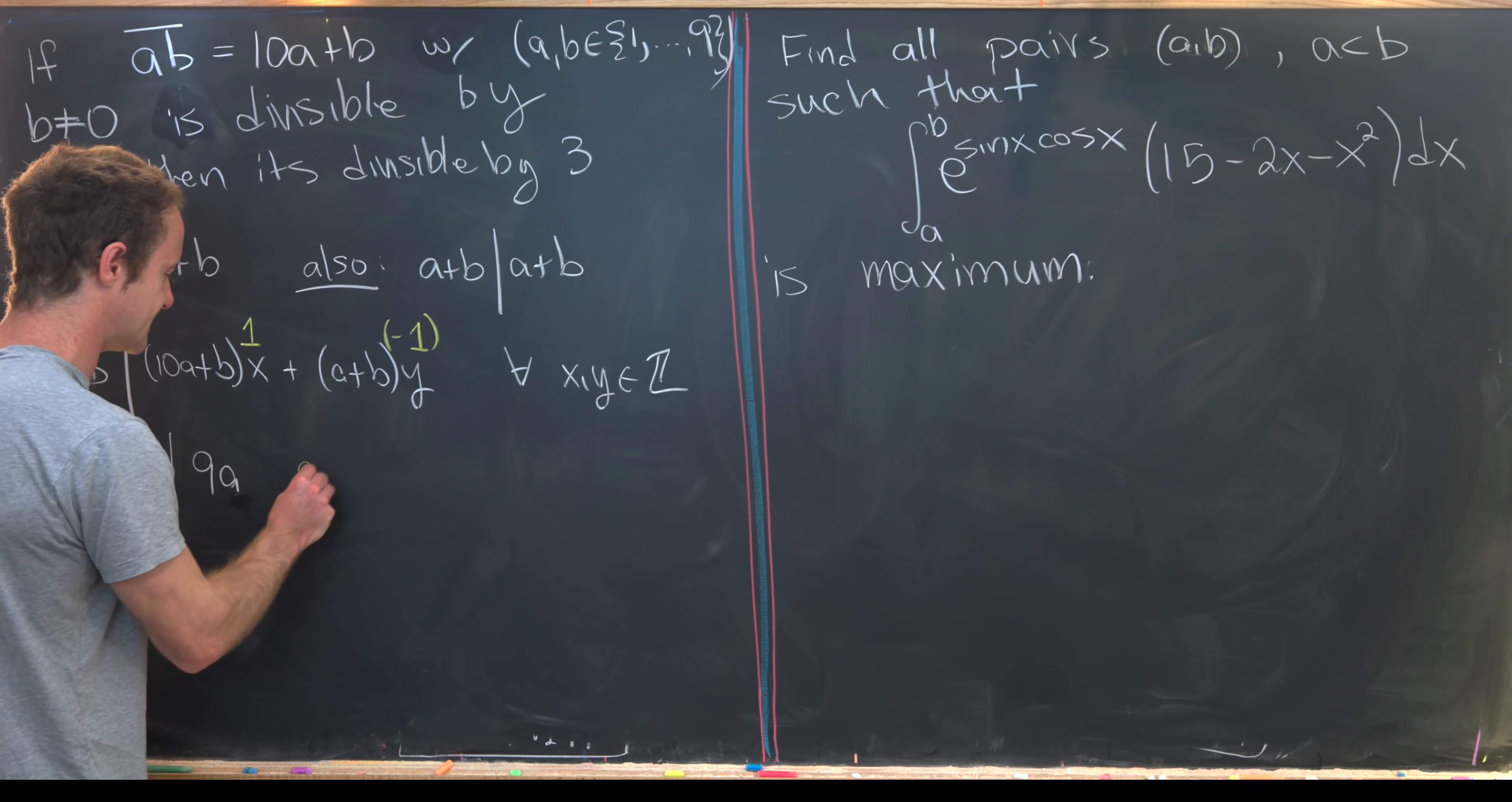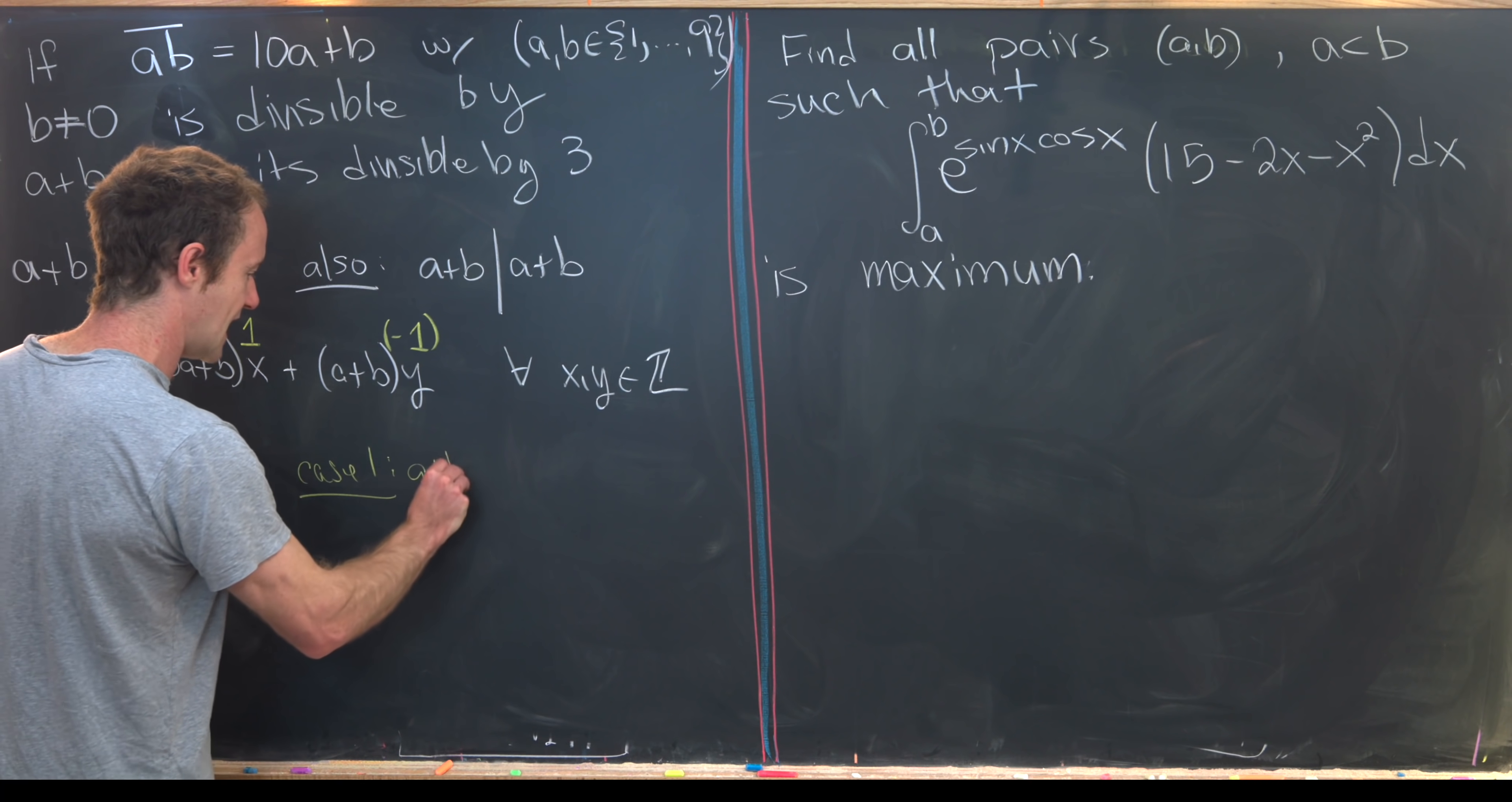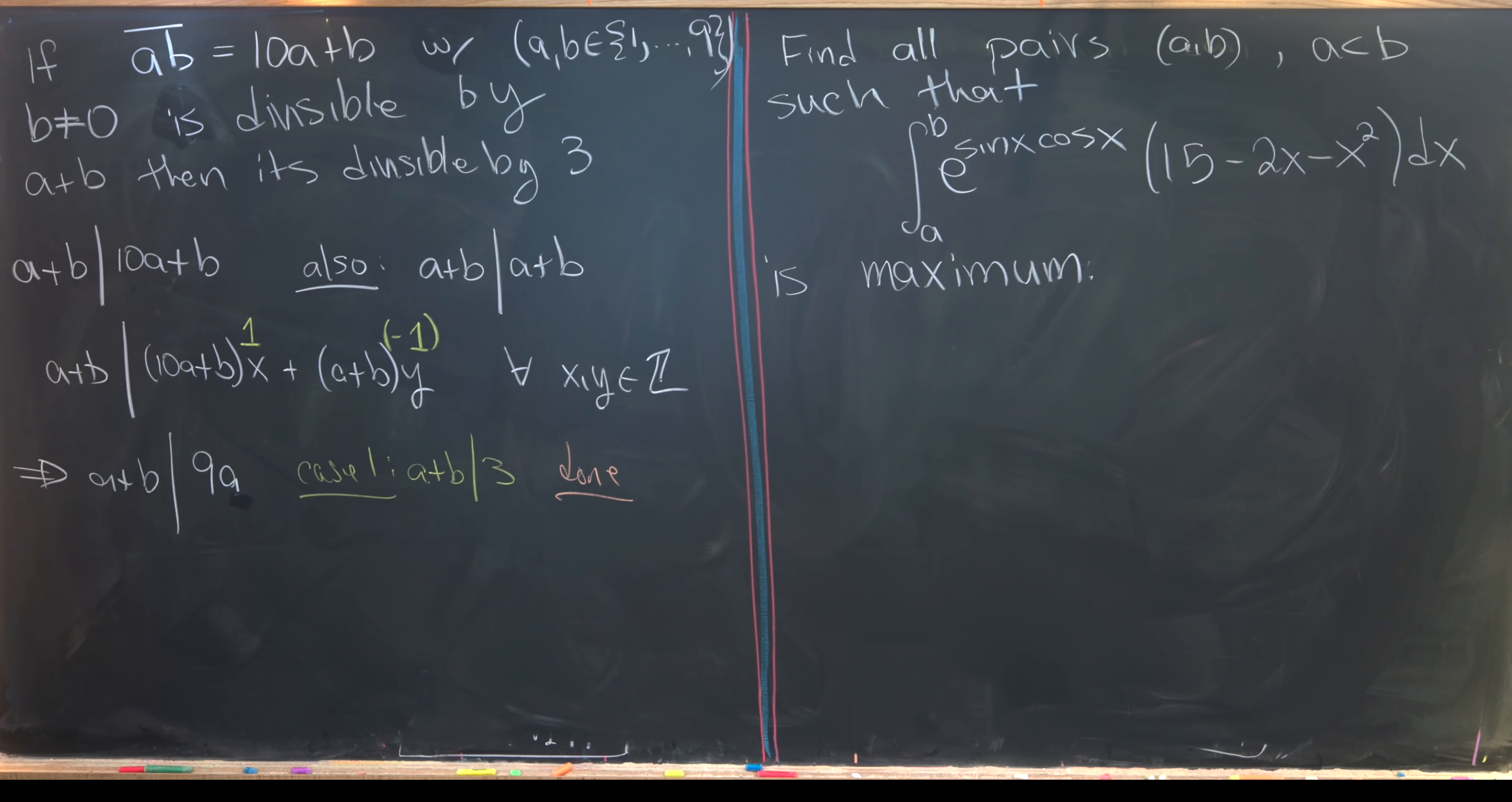And now from here, we're actually almost done. We want to break this into two cases. So the first case is that a plus b divides 3. In other words, we are already done. Okay. And then the next case, so I'll call that case 2, is that a plus b does not divide 3.